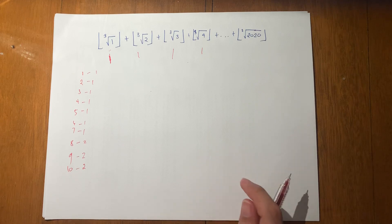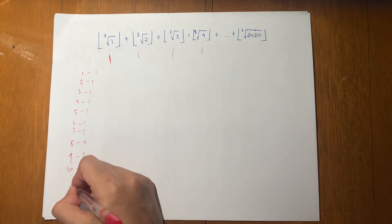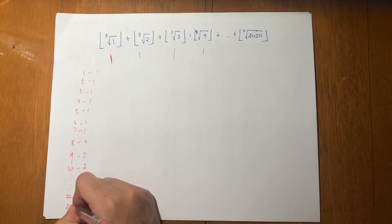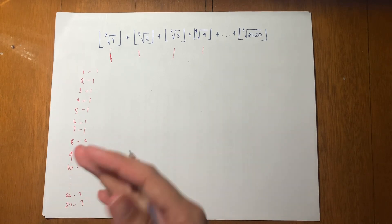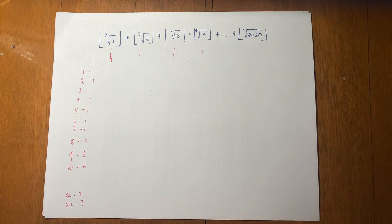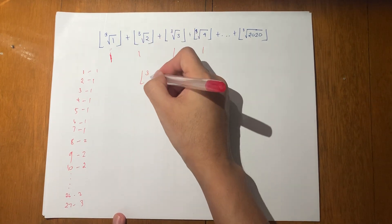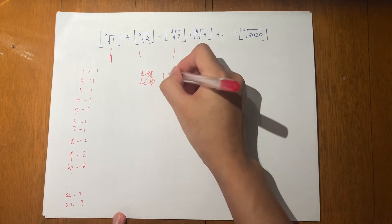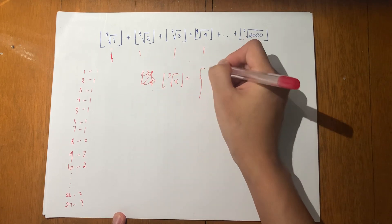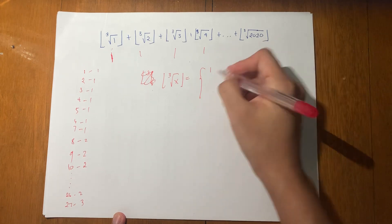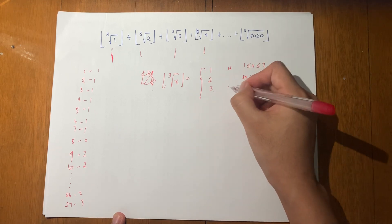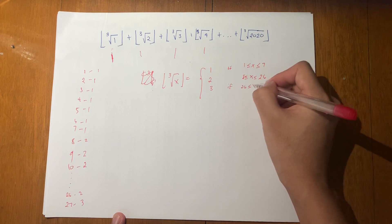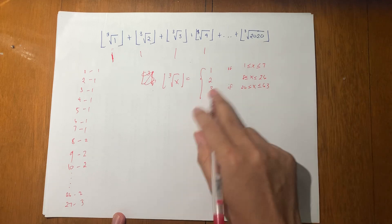Gets? So the question then is: until when is the value 2? It continues until 26. When you reach 27, you get 3. And then from 27, the value is 3 until 63 — because at 64, the cube root is 4, so the floor is 4 already. So the value of the floor of the cube root of x is equal to 1 if x is between 1 and 7, 2 if x is between 8 and 26, 3 if x is between 27 and 63, and so on.